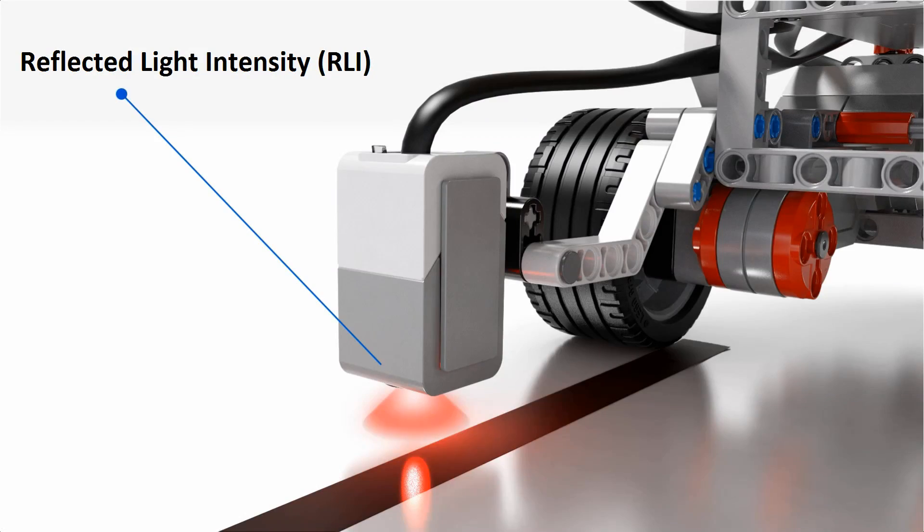The reflected light intensity mode measures the total amount of light entering the sensor. This includes the reflection of the red LED plus any lights in the room.